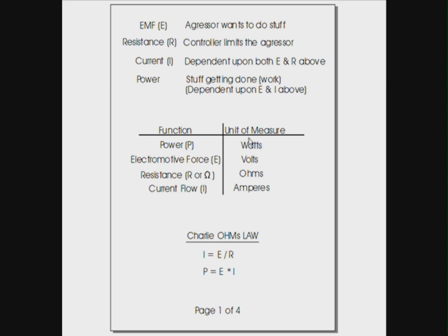So we'll start out by pointing out the electromagnetic force, which is listed down here, electromagnetic force, which has a label symbol of E. It's an aggressor, wants to do stuff. Electromagnetic force is an imbalance of charges and they want to do things. They want to neutralize themselves, but they have to go through other things to neutralize themselves. All things in the physical world try to reach neutral balance point.